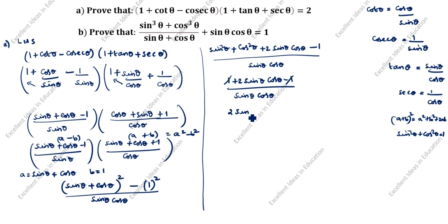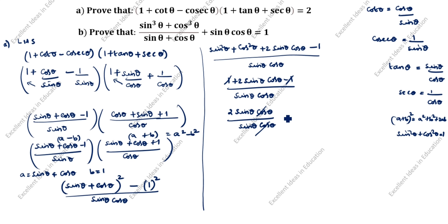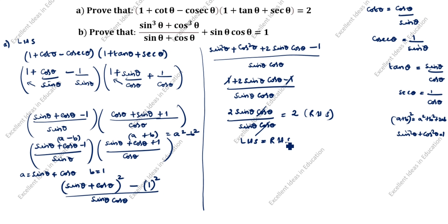The −1 and +1 cancel. What is remaining? 2 sin θ cos θ divided by sin θ cos θ. sin θ cos θ in the denominator and numerator cancel. What is remaining? 2. You see here LHS equals RHS. This is RHS.